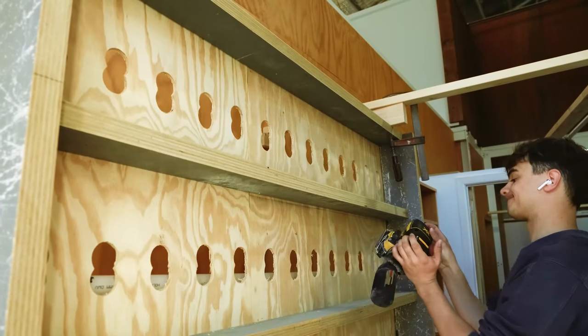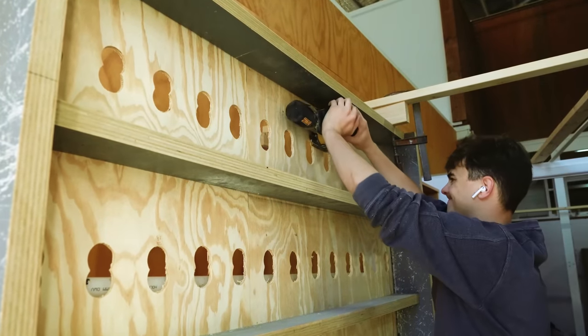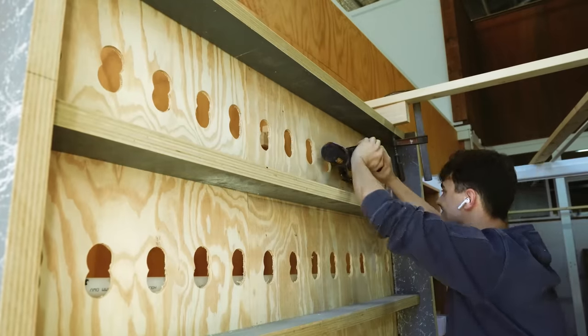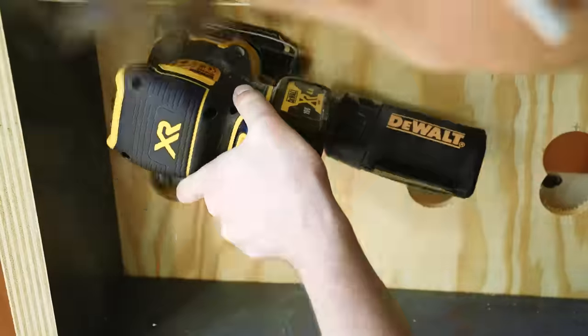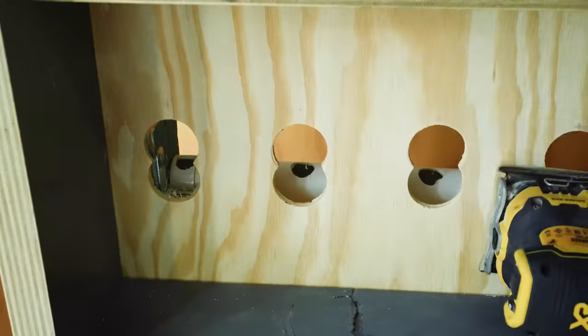After I was done drilling all the holes, it was time to give the back plywood a sand. So I sanded this down because I didn't want to paint the plywood, I just wanted to stain it to try and match the room as best I could. So I sanded it down before I gave it a coat of varnish.